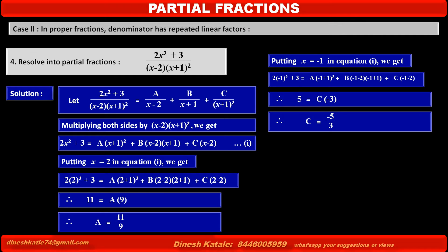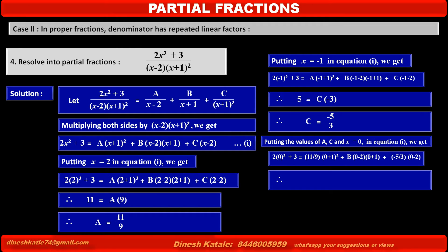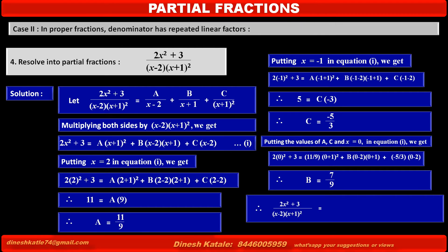Putting the above values of A and C, and taking x = 0 as a convenient value in equation 1: 2(0²) + 3 = (11/9)(0 + 1)² + B(0 - 2)(0 + 1) + (-5/3)(0 - 2). Solving the above step, we get B = 7/9.